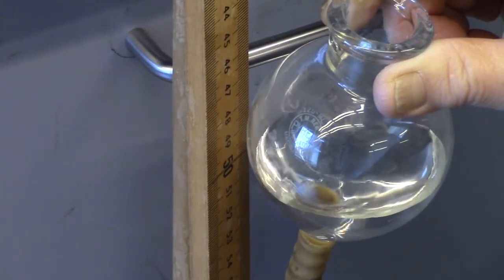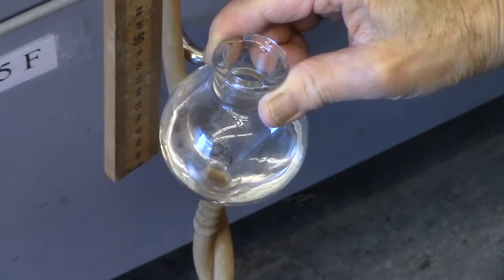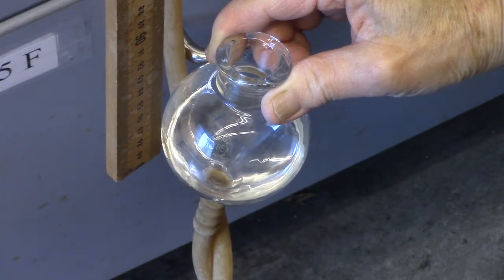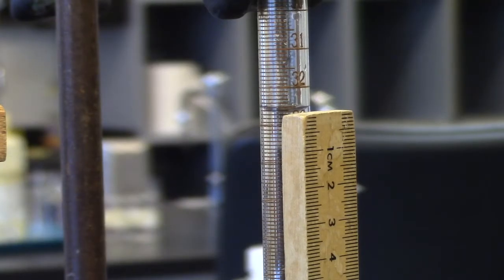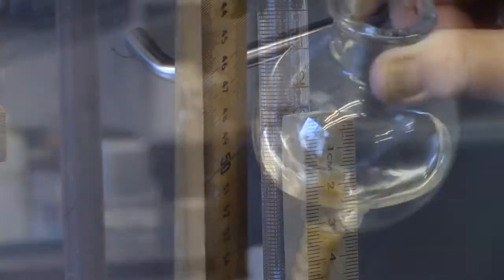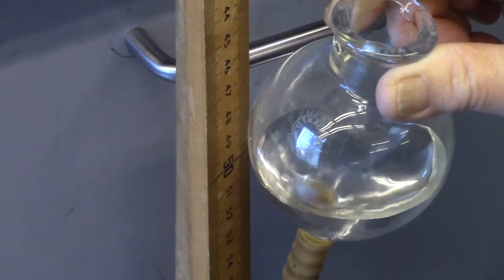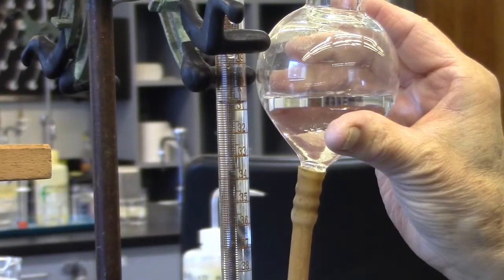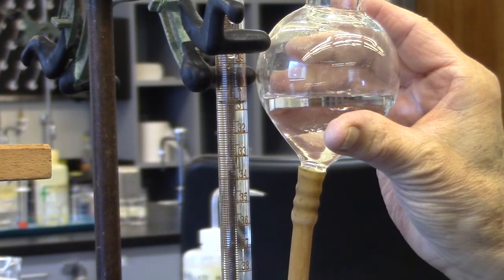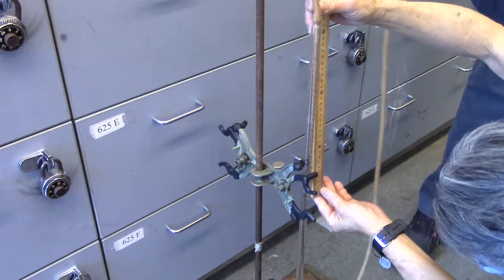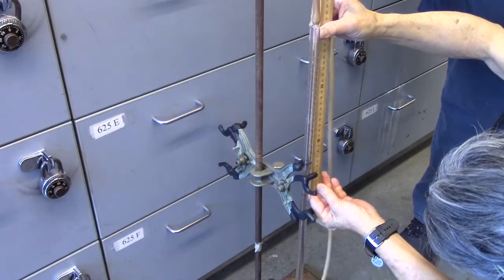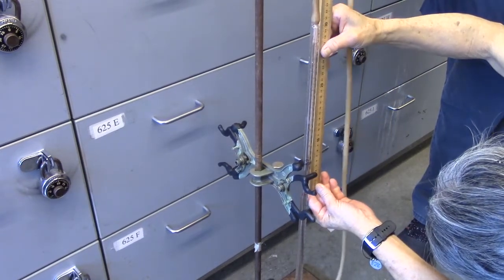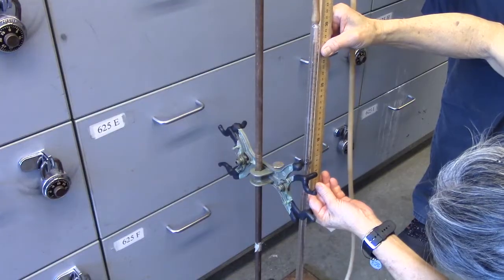This procedure will be repeated for minus 100 centimeters below. Note that each measurement will be done twice. Repeat minus 50 centimeters and minus 100 centimeter measurements along with the one at equal water levels. The positive measurements are usually done on the floor. Now that negative height differences have been completed, the measurements for the positive height differences will be made.